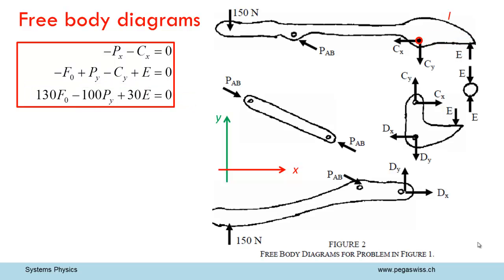The three equilibrium conditions give us three equations. The sum of all forces in x direction equals zero. The sum of all forces in y direction equals zero. The sum of all torques of these forces equals zero. The signs can be taken from the drawing and related to the coordinate system.